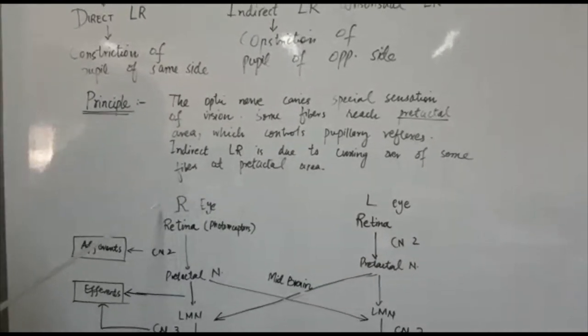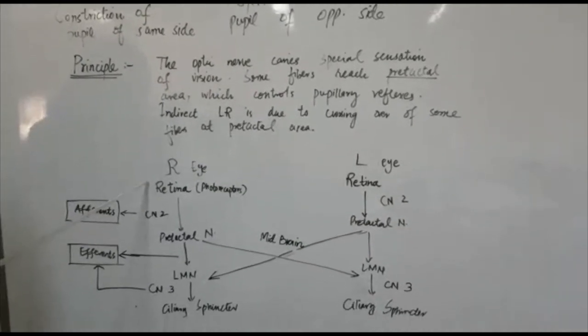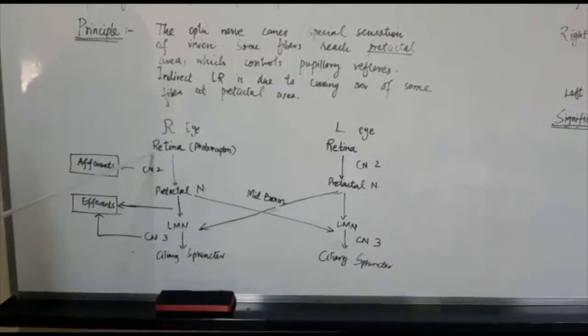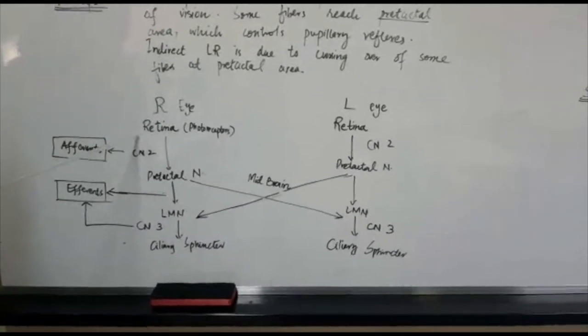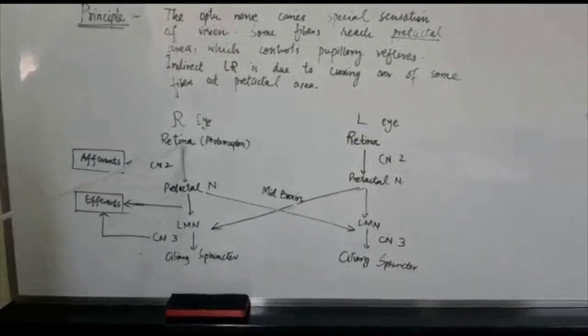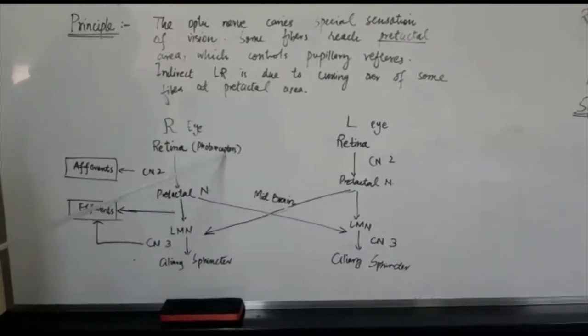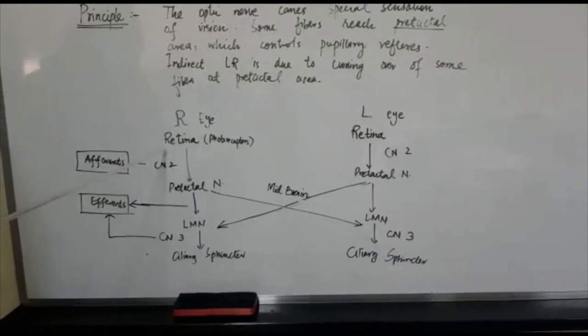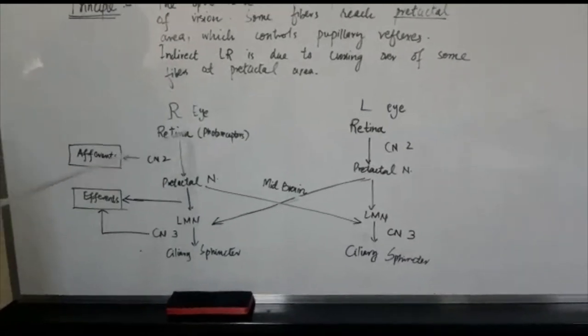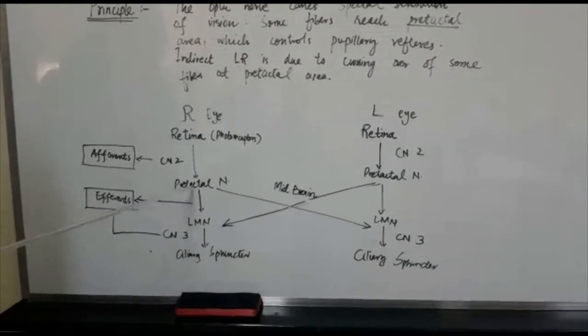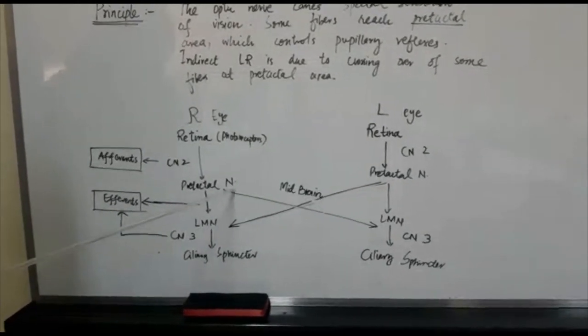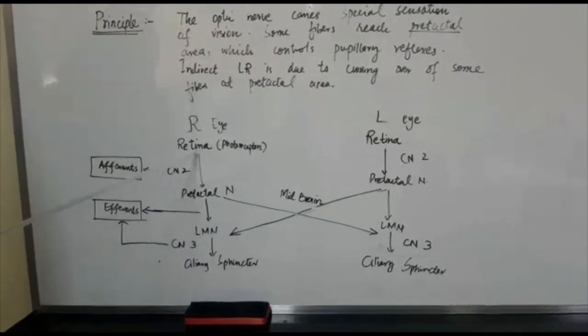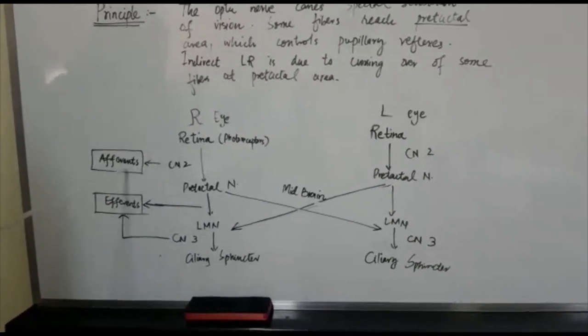Now let us see in a flow chart how these reflexes are elicited. First of all, when a stimulus is thrown in the form of light onto the retina, it is perceived by special receptors which are photoreceptors. This stimulus is carried to the pretectal nucleus of midbrain via second cranial nerve or optic nerve. This nerve is the afferent nerve.